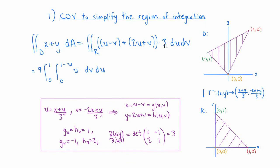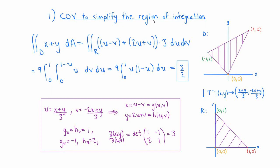After we clean up the integrand it becomes 9u. We think of the region R as a type 1 region with u going from 0 to 1, and for each value of u, v going from 0 to 1 minus u. Then we can easily evaluate the iterated integral and we find that the value of our original integral is equal to 3/2. This is a simple example of how change of variables in multiple integrals can be used to simplify the region of integration in a double integral.